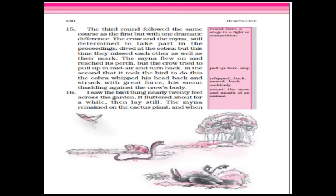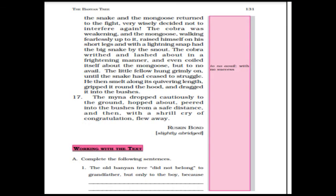I saw the bird flung nearly 20 feet across the garden. It fluttered about a while, then lay still. The myna remained on the cactus plant. The crow was struggling and after some time it died. When the snake and the mongoose returned to the fight, the myna very wisely decided not to interfere again. It understood that when two champions are fighting, it is better to stay away.